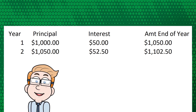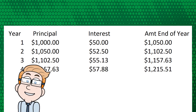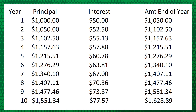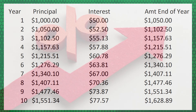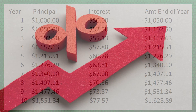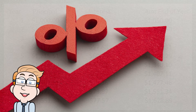Add that to your starting amount and by the end of the second year you have $1,102.50. This pattern continues each year — the interest is calculated on the total amount (principal plus previously earned interest), not just the original $1,000. By the tenth year, your initial $1,000 has grown to $1,628.89. You can see the snowball effect: not only does your initial investment earn interest, but the interest from previous years earns its own interest, leading to exponential growth over time.